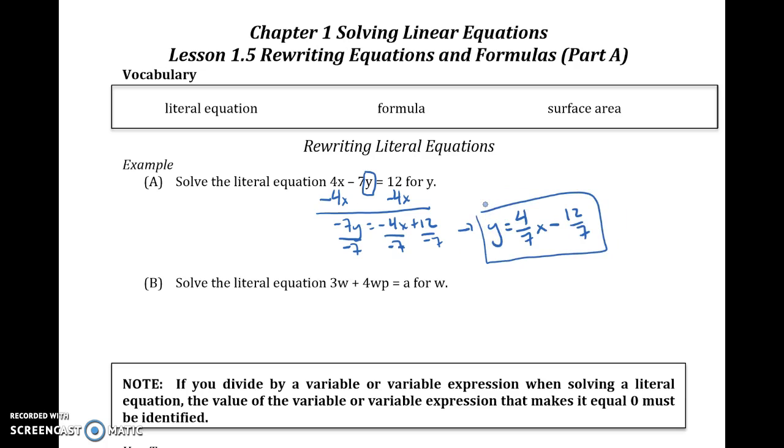And again, it's okay to have another variable in my answer as long as I've just done my objective, which is get y by itself. And I can do that for anything. So if you take a look at b, I want to get w by itself. And here you might think, there's two w's here. What can I do?